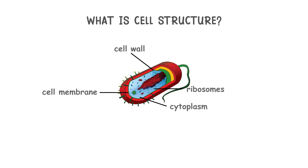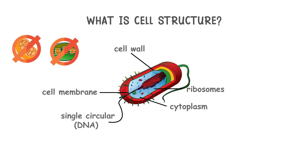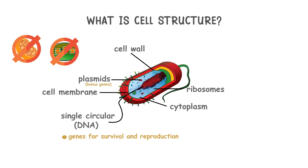However, bacterial cells don't have mitochondria or chloroplasts. Instead, their DNA is a single, circular strand that floats freely in the cytoplasm. This circular chromosome contains all the essential genes for survival and reproduction. Some bacteria also contain plasmids — small rings of DNA which contain bonus genes. In addition, some bacteria contain a structure called flagella, a thread-like structure that rotates in order to propel the bacterium and allow it to move.